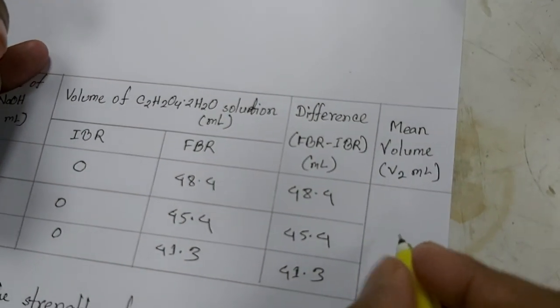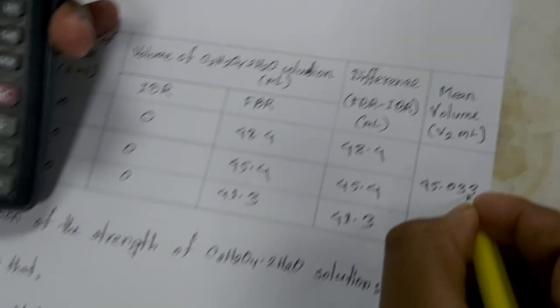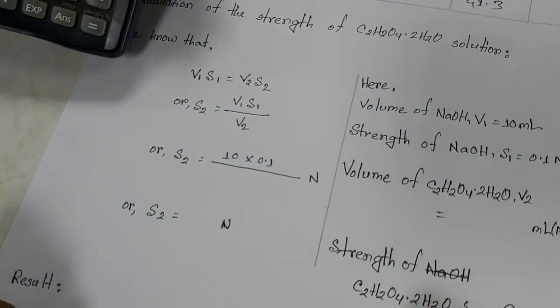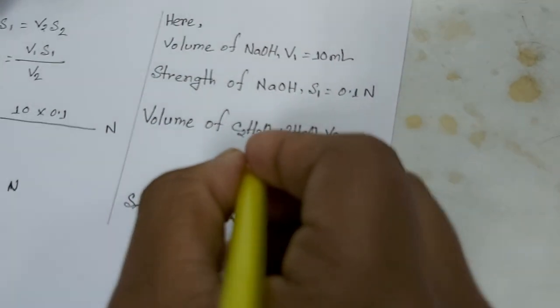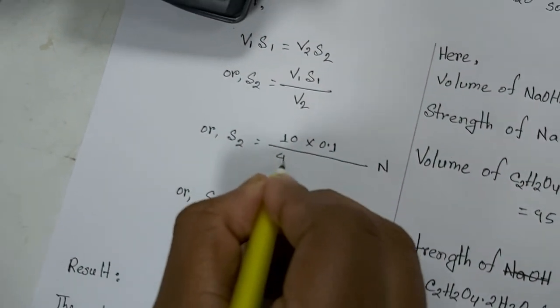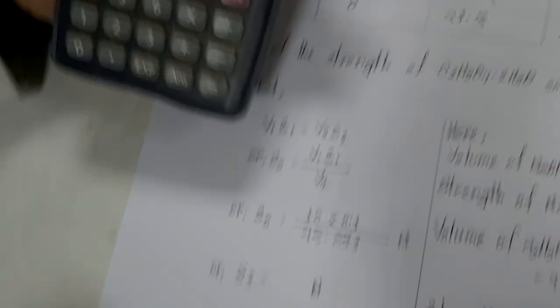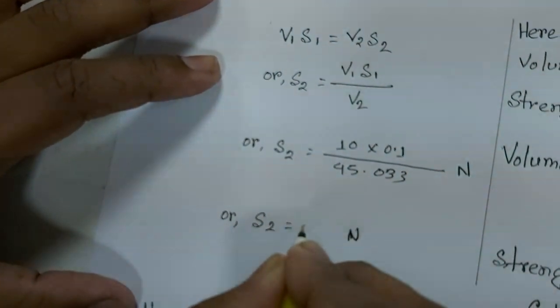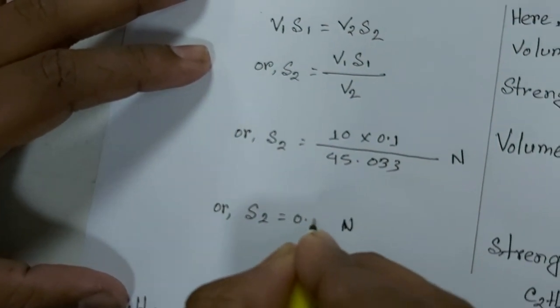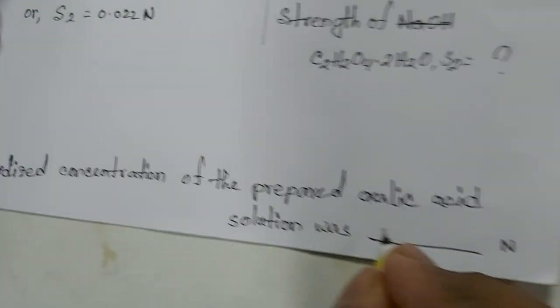The average value is 45.033. This is the volume V2. We calculate the final concentration as 0.022, and this is the final value for the titration.